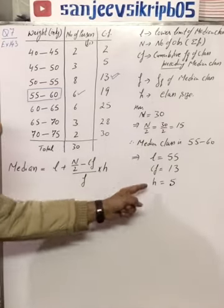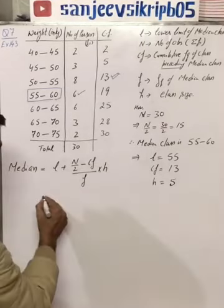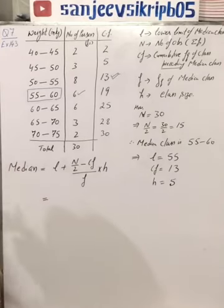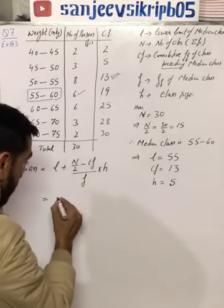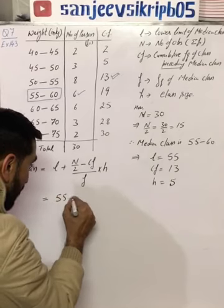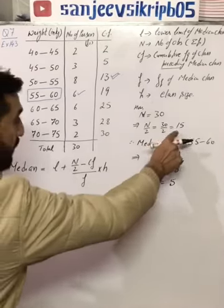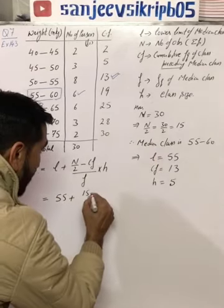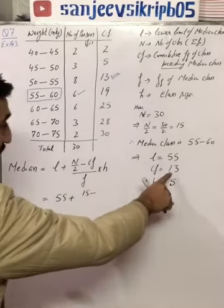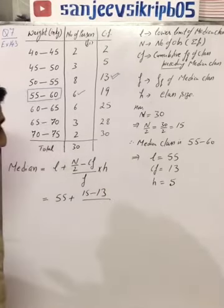So I hope all terms are clear and how we found them. Let's put the values of these terms in the formula of median. What is L? 55. What is N by 2? 15. What is CF? 13.